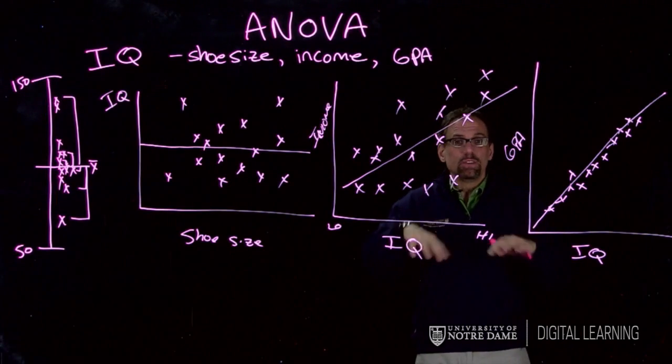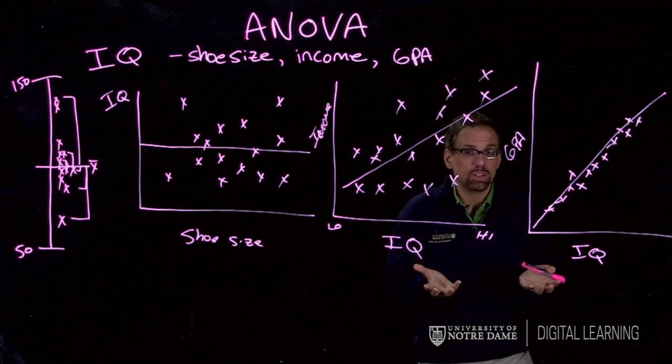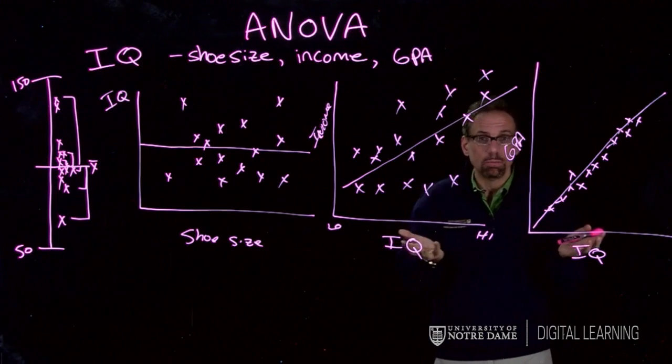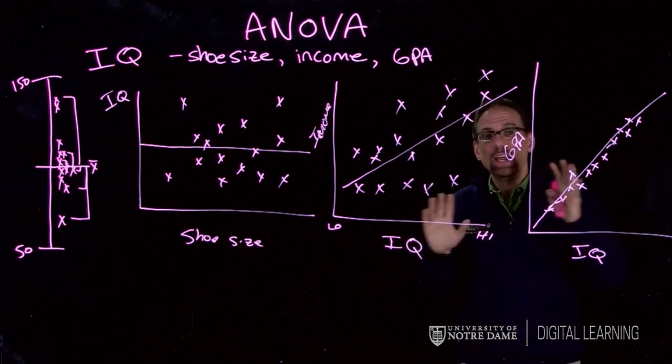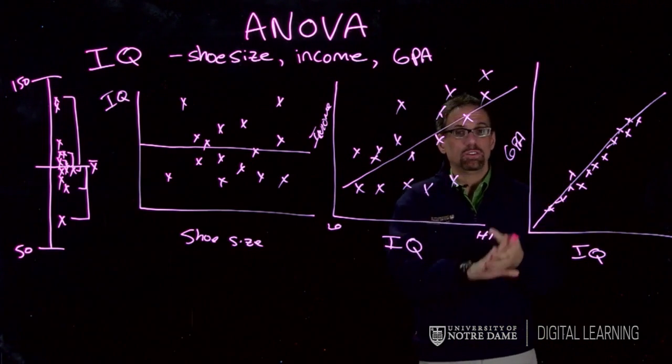ANOVA is part of this class of things we're going to do in the next chunk of the course called the general linear model. This concept applies to ANOVA, regression, and correlation, our next two topics.